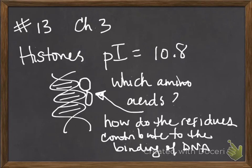So for this first part, which amino acids do you find in histones? If you have a high PI for the overall protein, you know that the amino acids have to have a high pKA to allow for the PI to be so high.